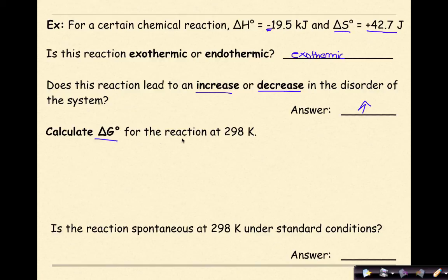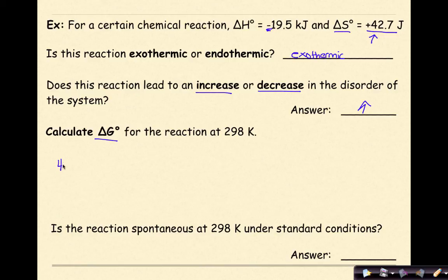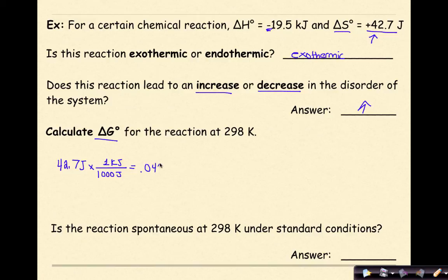Calculate delta G at standard state for the reaction at 298 K. The first thing we need to do is remember that delta G is going to be recorded in kilojoules. Therefore, we need to take our value for delta S and convert it into kilojoules — that will always be step one. So, 42.7 joules multiplied by 1 kilojoule over 1,000 joules gives us 0.0427 kilojoules.